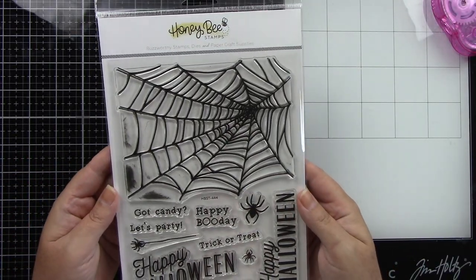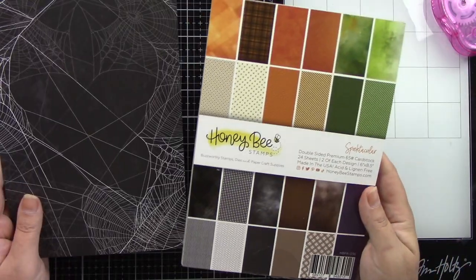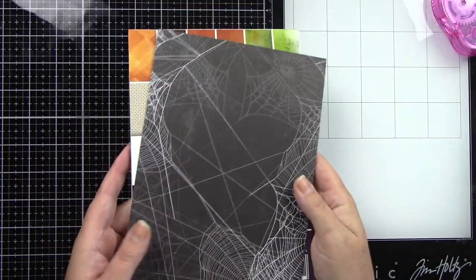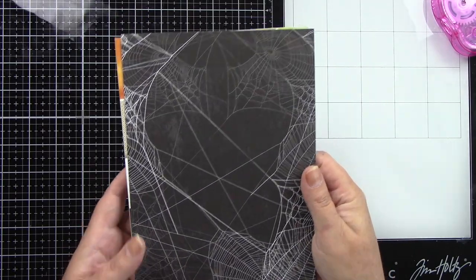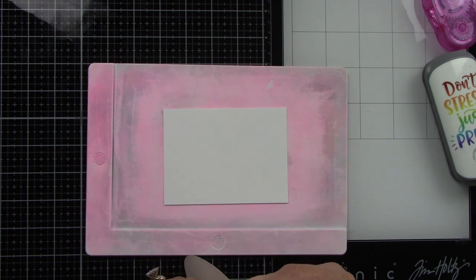Also using the Happy Halloween stamp and coordinating die, and the Spooktacular paper pad from the release. I've taken a die-cut circle from the Sweet Stacks Circles cut from masking paper.